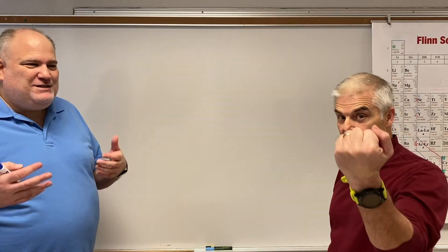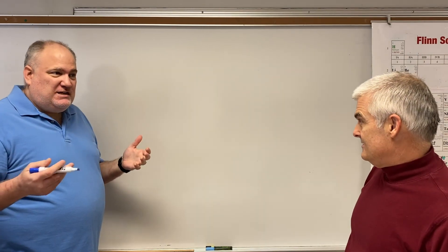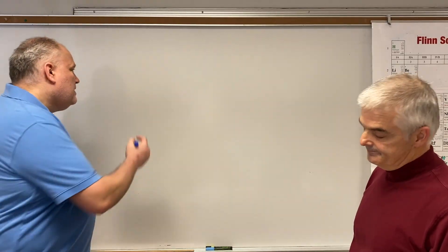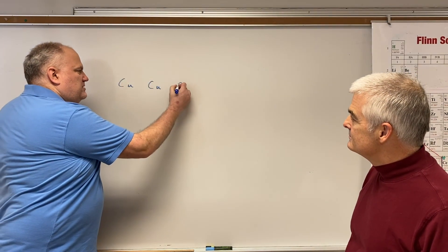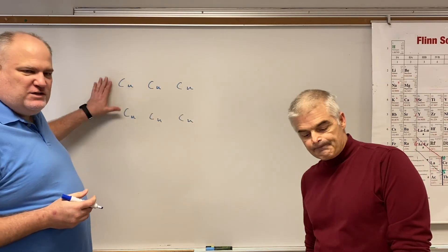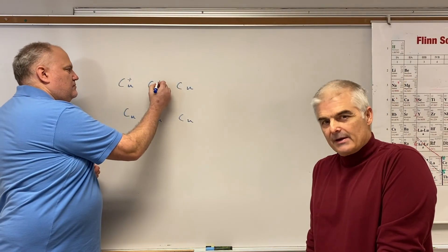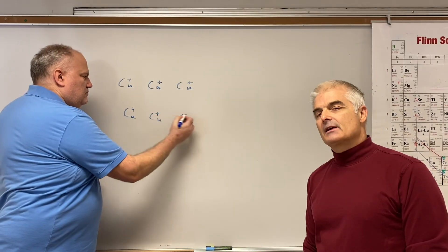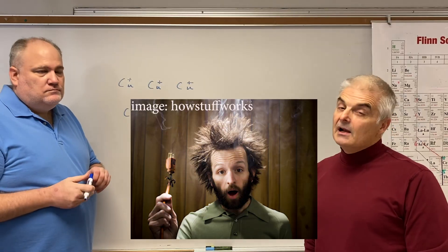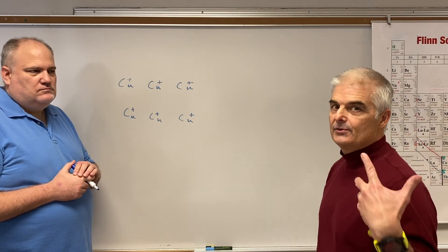Now let's talk about metallic bonding. Metallic bonding is really just metal ions interacting with their electrons. Let's take copper — I'll draw a number of coppers in two rows representing trillions. Something you know about all metals is that they're good conductors of electricity, meaning electrons can flow through metals. That tells you how they're held together.